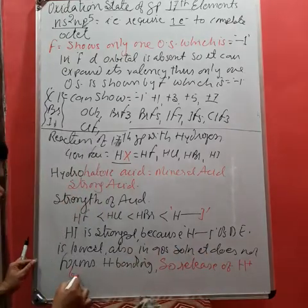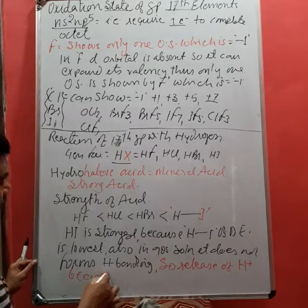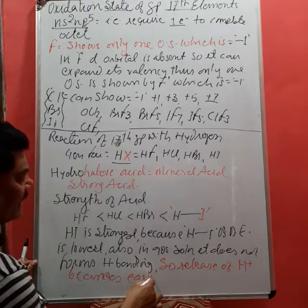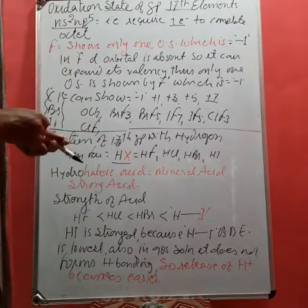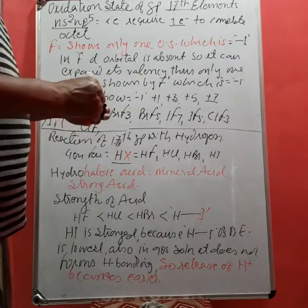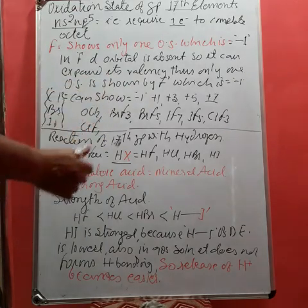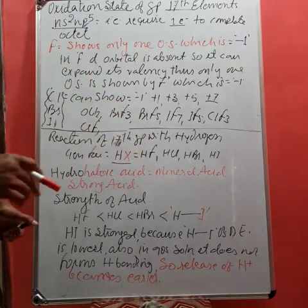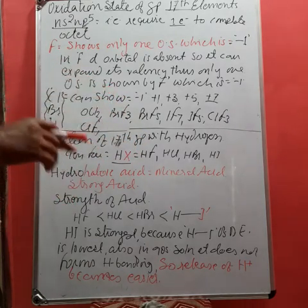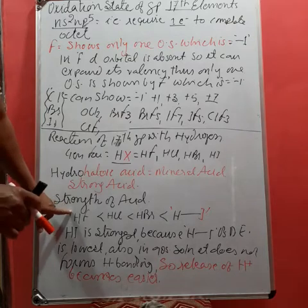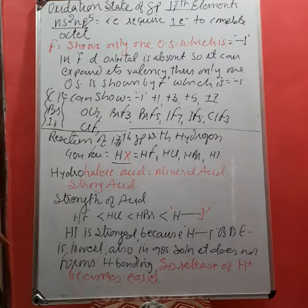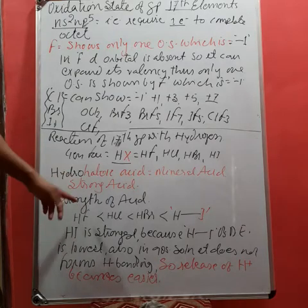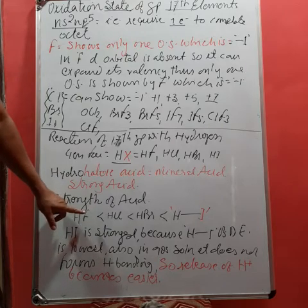The strength of acid depends on two very important factors: first, bond dissociation enthalpy, and second, intermolecular hydrogen bonding in aqueous solution. In aqueous solution, HF forms hydrogen bonds with water, aligning all hydrogens with the water molecule, so it is unable to release its H⁺ cation easily.